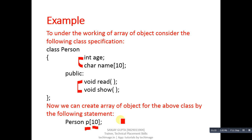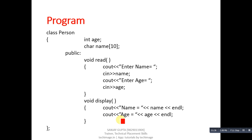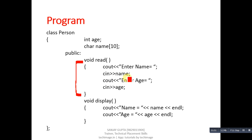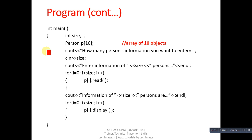This is the complete program for the example. The name of the class is Person; two attributes, age and name, are declared. The first function is read, which is responsible for reading name and age from the user. The second function is display, which is responsible for printing name and age on the console. This is the complete definition of the Person class.